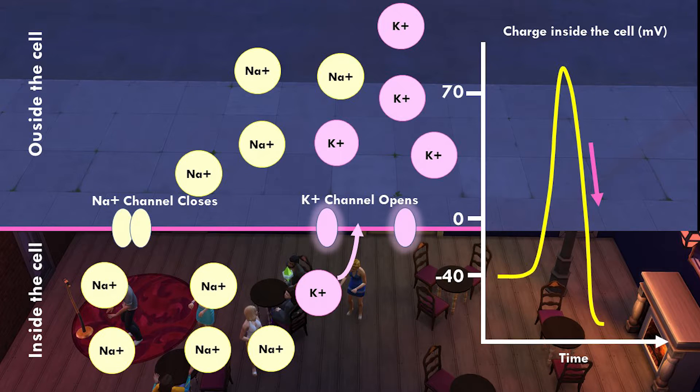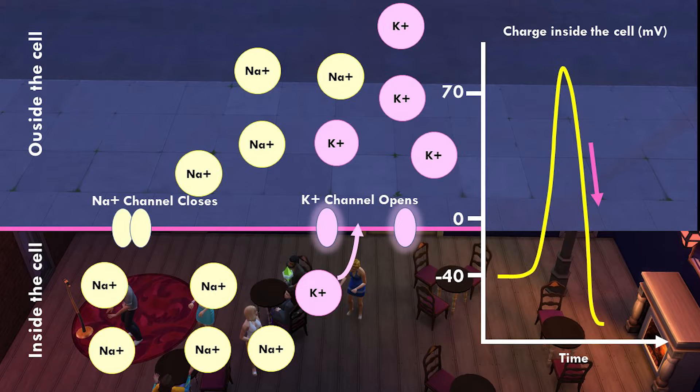So the charge inside the cell winds up even more negative than it was when they started — there are fewer positive ions inside than at the beginning. This is when the neuron is in a state called hyperpolarization: it's more negative than it normally would be. Then the potassium channel closes, keeping everybody in place.